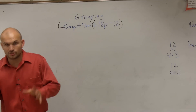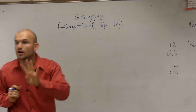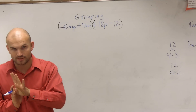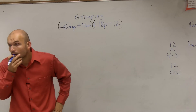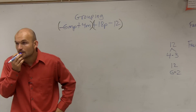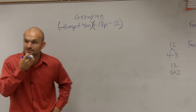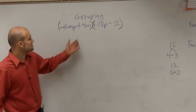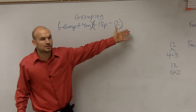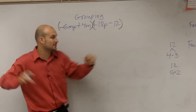When you see four terms, I want you to automatically think factoring by grouping. What if you figure out you can't use a number? We'll do it and see what happens. So what I'm going to do is break it up into two groups and factor each one separately.